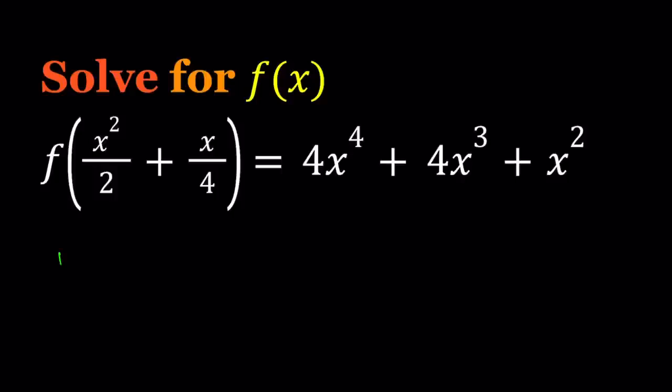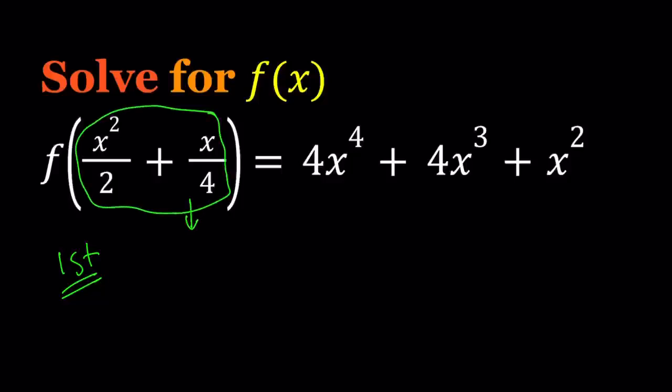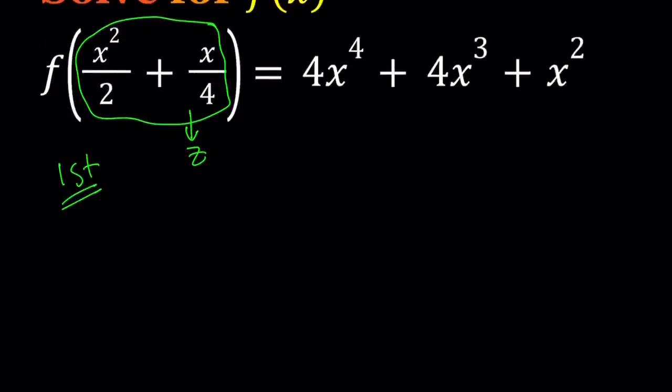My first method basically involves solving a quadratic equation. My goal is to solve for f of x — find an expression for f of x. I'm going to take the whole argument here and set it equal to z. So now my goal is to find an expression for f of z and then turn it into f of x. This means f of z equals the right-hand side.